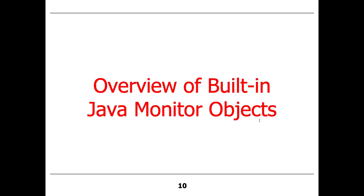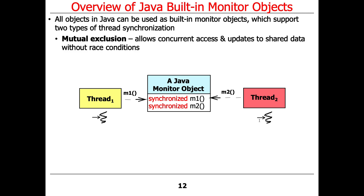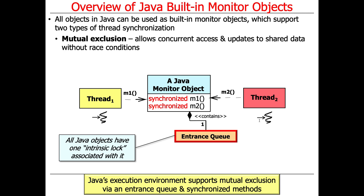Those are the three primary capabilities that a monitor provides. All Java objects can be used as built-in monitor objects — anything with a class definition can be a monitor object; primitives like int or long cannot. There are two types of thread synchronization supported: mutual exclusion, which ensures exclusive access to the object's state through synchronized methods or statements. Every Java object has something called an intrinsic lock, and there's an entrance queue used to queue up threads wanting exclusive access to the monitor object's internals.